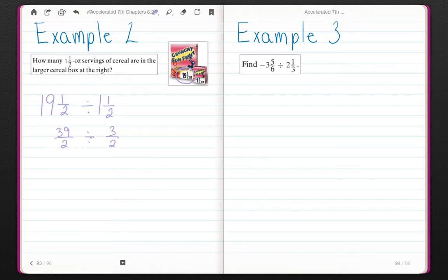I'm dividing fractions, so I'm going to multiply by the reciprocal of my divisor. 39 halves, and here's where we change, times 2 thirds. These switch into the reciprocal. Now I can cross cancel. 2 divided by 2 is 1. 3 goes into 39, 13 times. 13 times 1 is 13. 1 times 1 is 1.